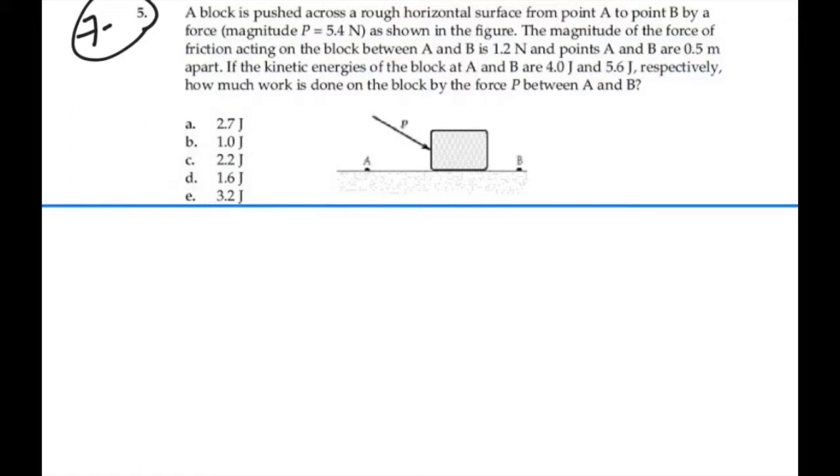There's a lot going on here. We've got a force P equal to 5.4 newtons, and it's acting on the block at some angle, but we don't know what that angle is. So it's kind of hard to figure out the work based on that. But we do have points A and points B, and we know that the distance between them is 0.5 meters.